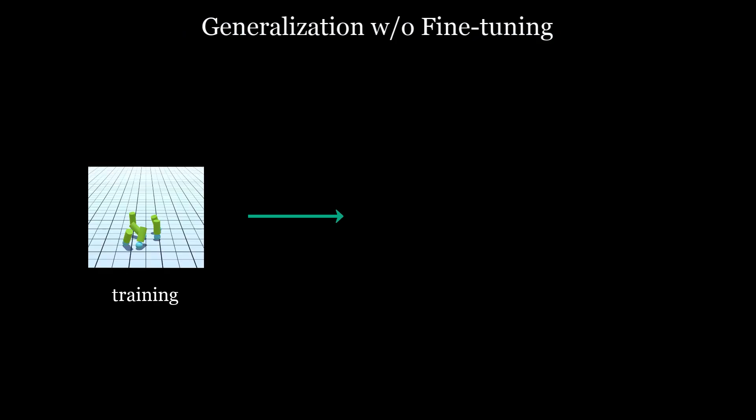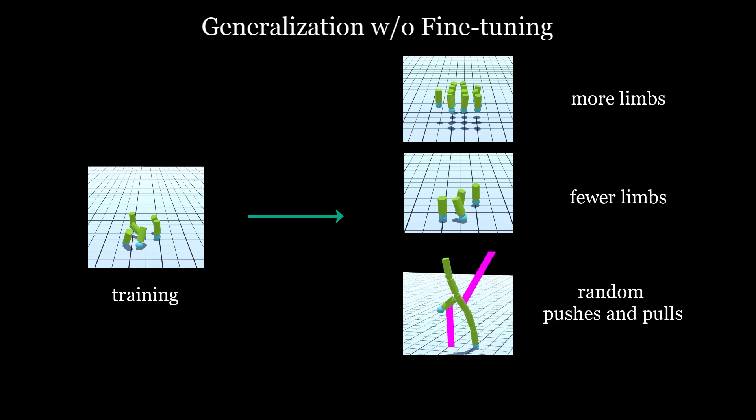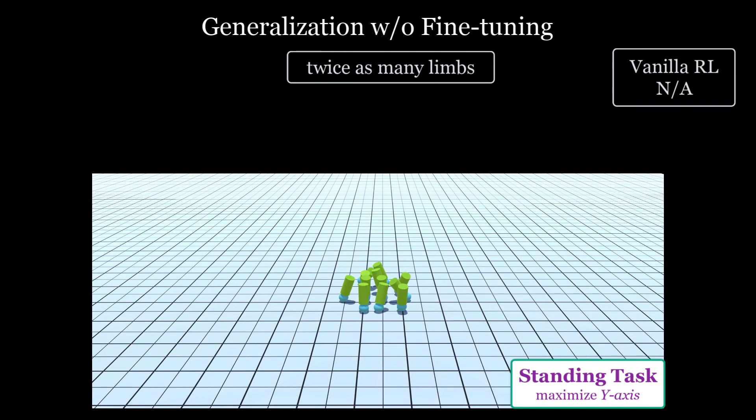We test this generalization ability by taking the controller trained with six limbs and running it with twelve limbs, or four limbs, or maybe some other number. With twelve limbs, the task is much harder, so it doesn't make a perfect tower, but we are able to go higher than six limbs without any further fine-tuning.